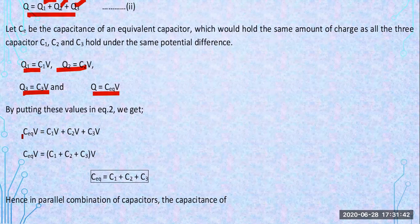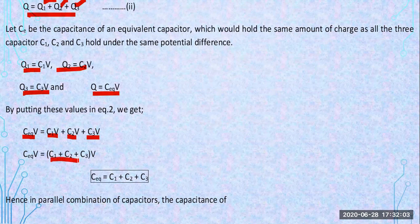For equivalent capacitance, it equals C1·V + C2·V + C3·V. Since the potential is the same for all — one plate of each capacitor is connected to one terminal and the other plate to the same terminal — taking V as common and cancelling it, equivalent capacitance equals C1 + C2 + C3.